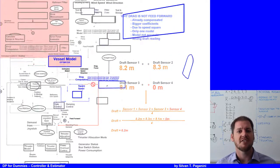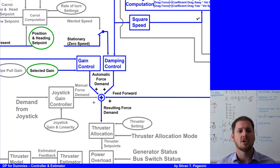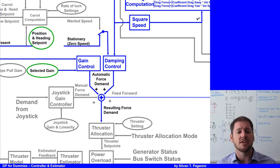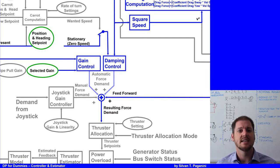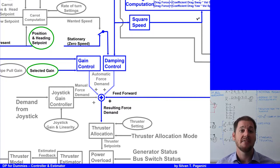Now we have all automatic force demands needed for the vessel to remain stationary. The resulting forces consist of: first, the feed-forward comprising wind force, aero force, and optionally external measured forces from special DP operational modes; second, the automatic force demand from the gain and damping control; and third, the manual control via the joystick.